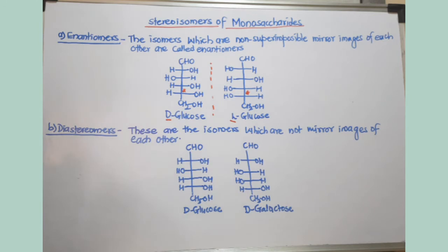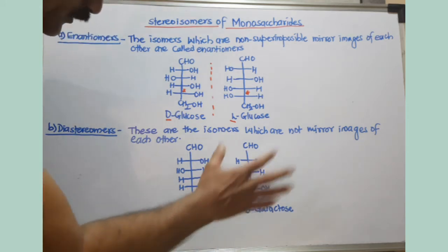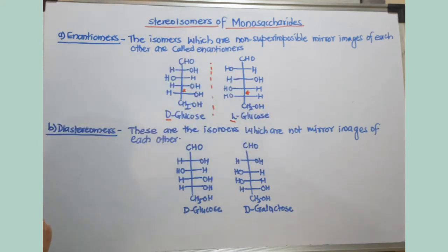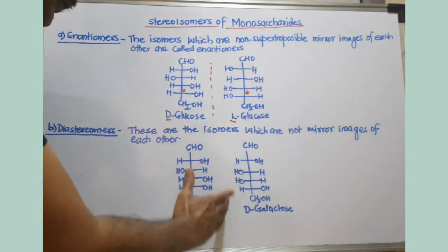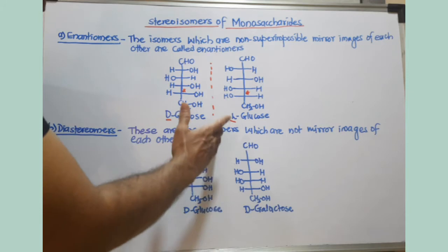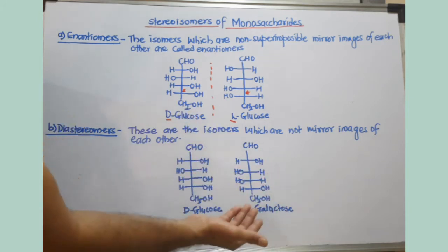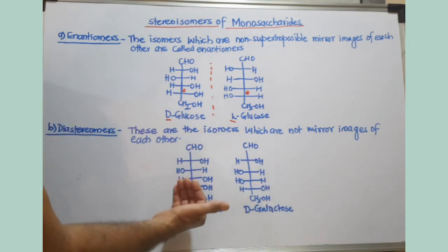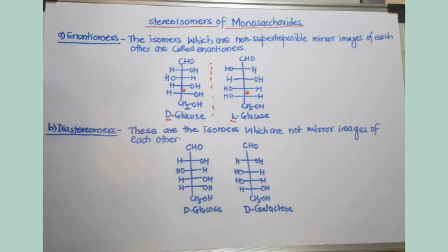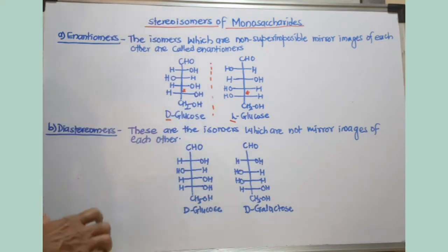What are diastereomers? These are isomers but they are not superimposable and they are not mirror images of each other. You can take the example of glucose and galactose — any two monosaccharides. There is no mirror image relationship between them, but still they are isomers. Such isomers which are not mirror images of each other are called diastereomers.